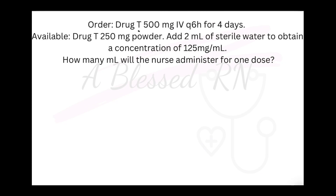Drug T 500 mg IV Q6 for 4 days. Available is Drug T 250 mg powder. Add 2 ml of sterile water to obtain a concentration of 125 mg per ml. How many ml will the nurse administer for 1 dose?